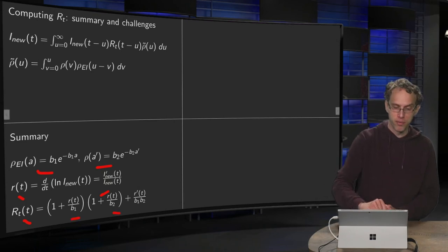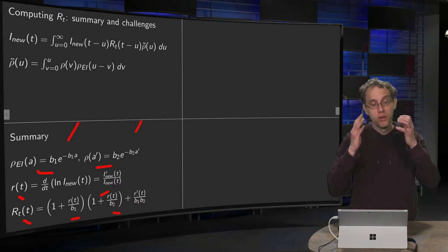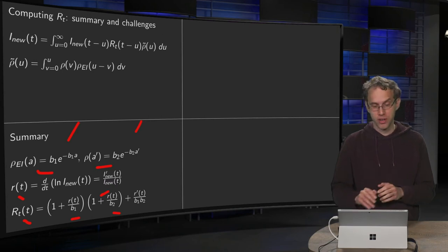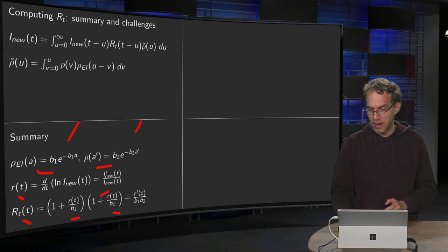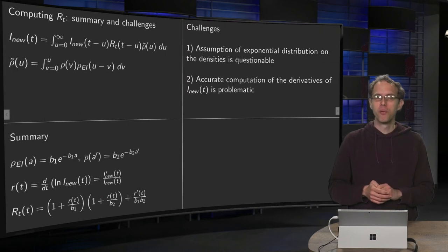where b1 and b2 are those expectation values of the probability densities. So far, so good. So, what's the problem? I mean, this looks fine. Well, problem. Let's call it challenges.